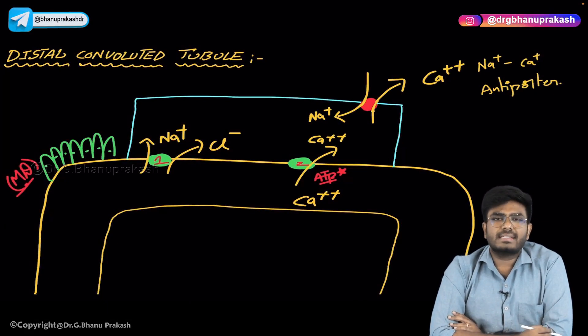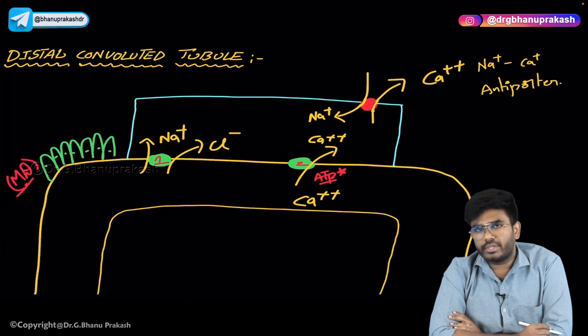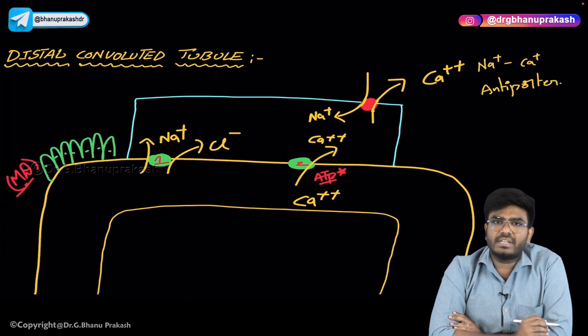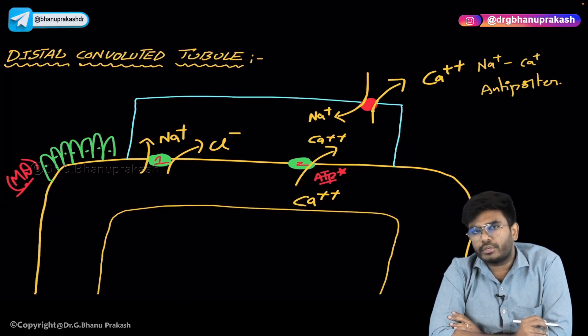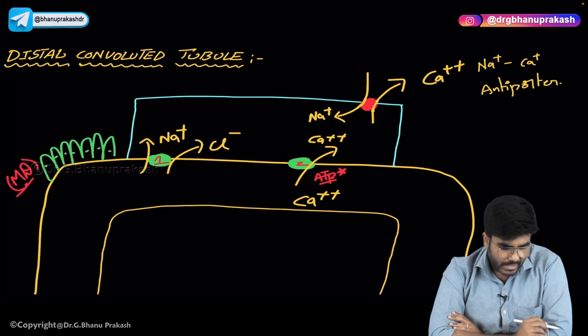Welcome back guys. After discussing the descending limb of loop of Henle and ascending limb of loop of Henle, let us now discuss the distal convoluted tubule. Here I am showing you a very simplified image of the distal convoluted tubule, or DCT.